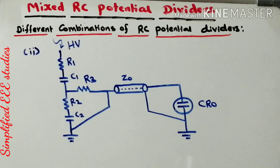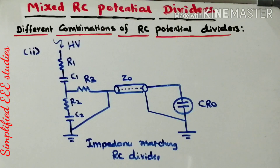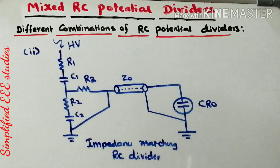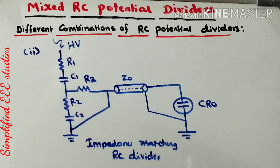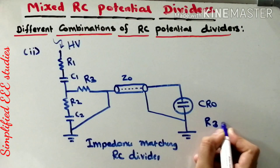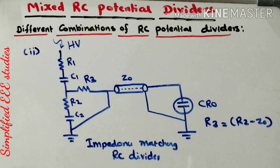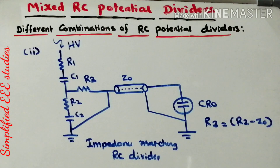The second combination is known as the Impedance Matching RC Divider. The total high voltage is measured using the low voltage arm and high voltage arm. The low voltage arm is directly connected through a coaxial cable to the CRO. The value of R3 is calculated by the formula: R3 equals R2 minus Z0, where Z0 is the characteristic impedance. This type is also helpful for calibration purposes.